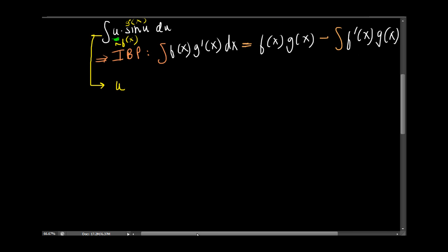That is g prime of x. So f of x times g of x. Now then we have to integrate sine of u, which gives us negative cosine of u.